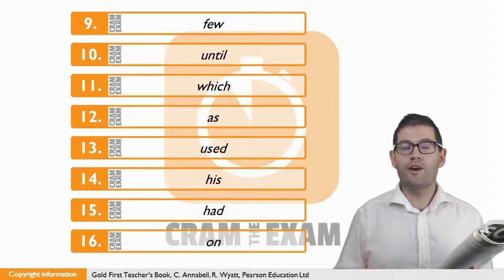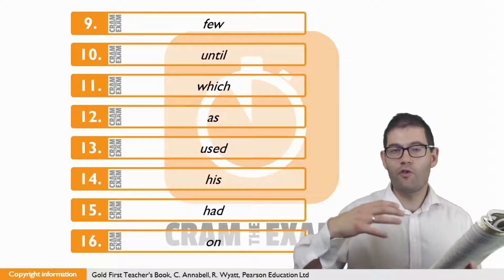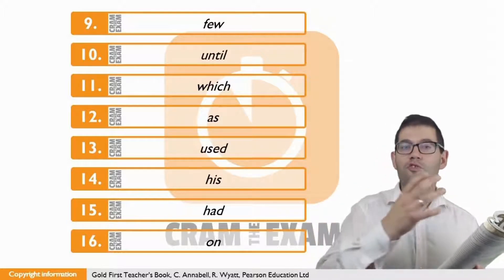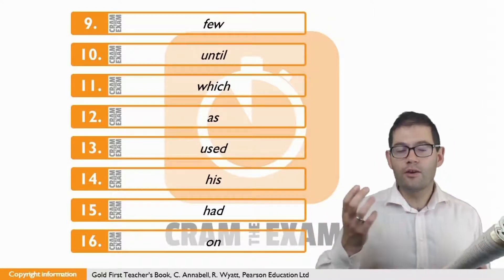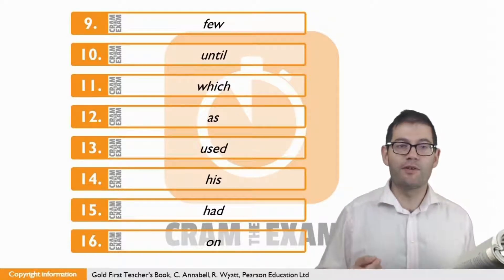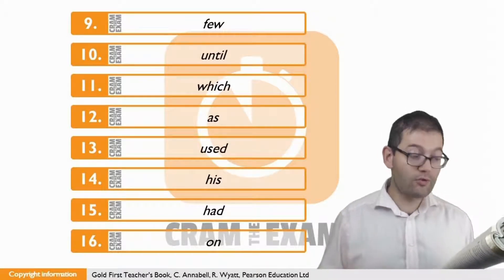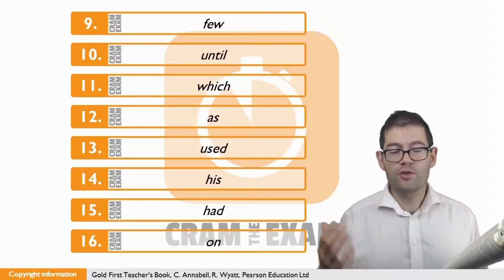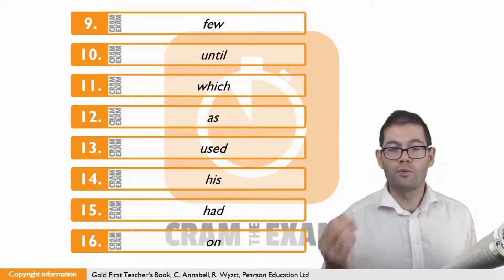For question eleven, we've got to find a word which connects what follows the gap with what was mentioned before the gap. We need a relative pronoun to do that. The type of relative pronoun that we need refers to a rooftop wall, which is a thing, which means that we need the relative pronoun which.